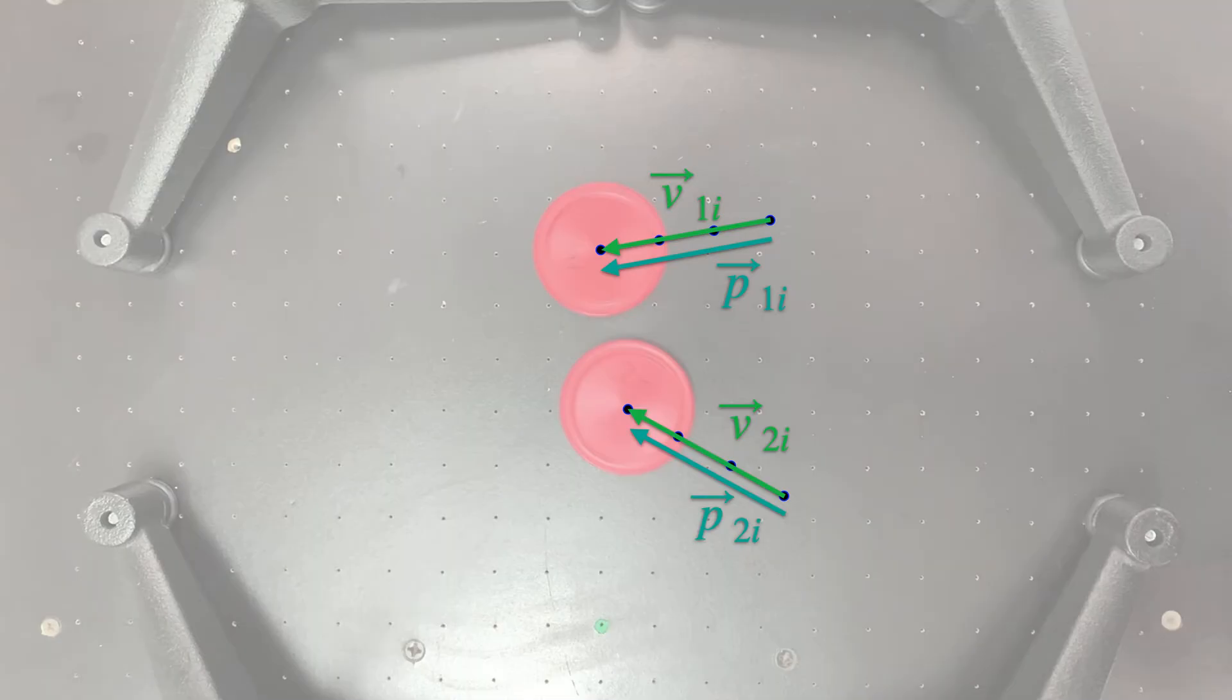But wait, there's a problem with the momentum vector number 2. Since momentum is the product of mass and velocity, and the lower puck has twice the mass, we need to double the length of its momentum vector.